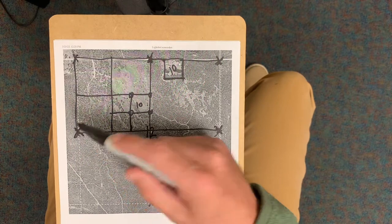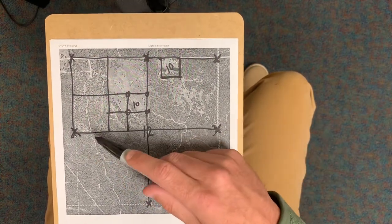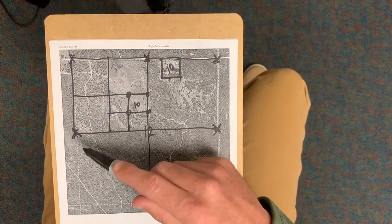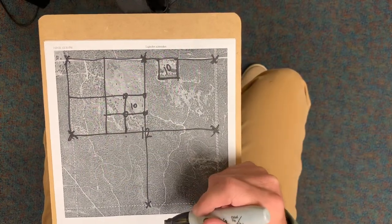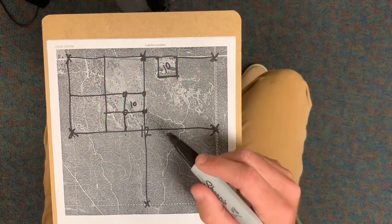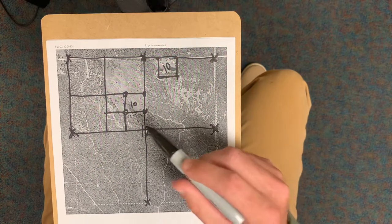And sometimes whenever we get to these corners, they're disturbed or they're missing or something like that. And the state law gives us procedures to follow that just requires more work for us to re-establish stuff like that. So that's how come your description can make a difference, how your land is described can make a difference in the cost of your survey.